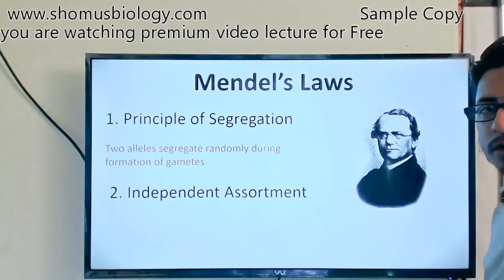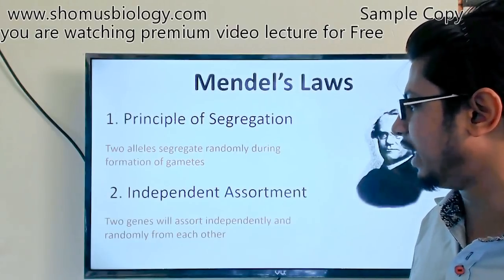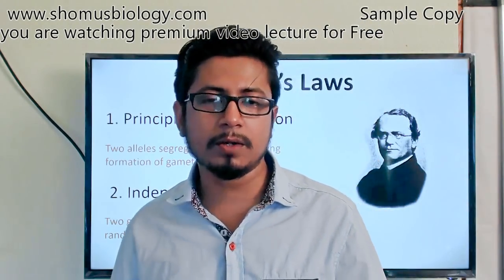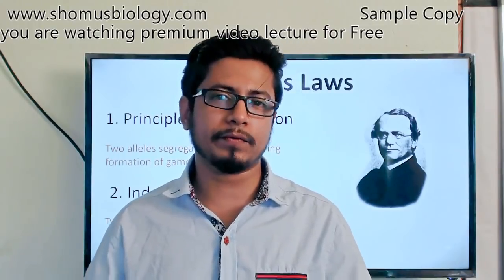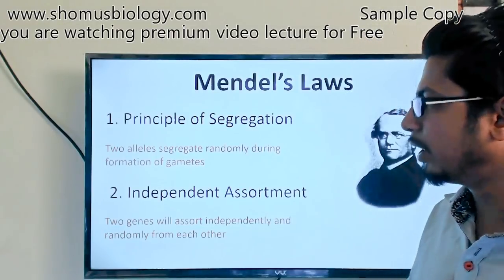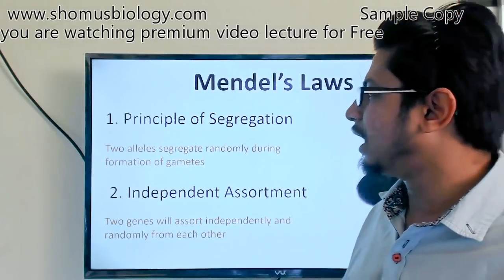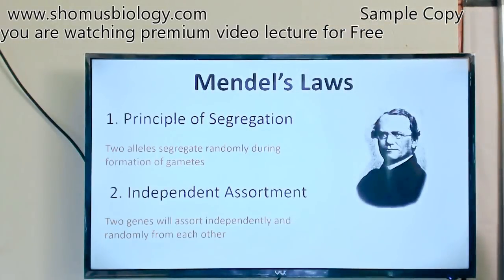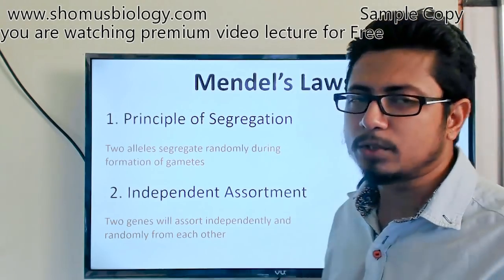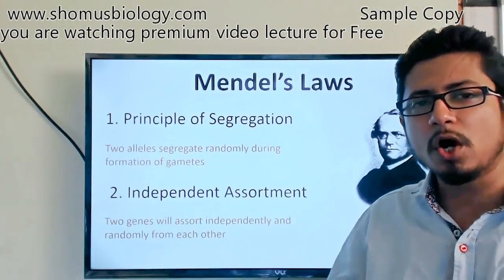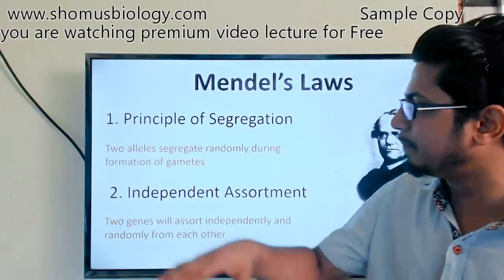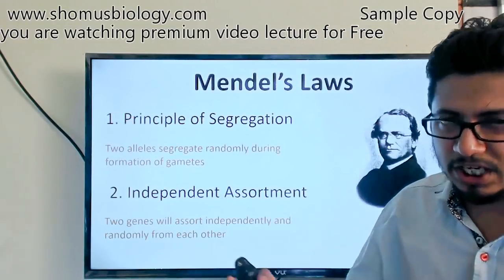The second idea is Independent Assortment. The Law of Independent Assortment states that two genes will assort independently and randomly from each other. This idea applies when we have more than one different character to deal with. For a single trait, two alleles segregate randomly during gamete formation. But with independent assortment, two genes assort independently — for example, for plant height with tall and short alleles, the chance of the tall or short allele moving to the gamete is 50-50, like a coin flip.